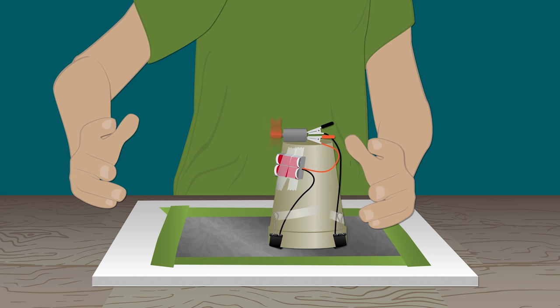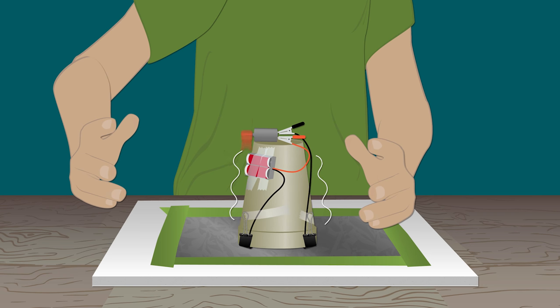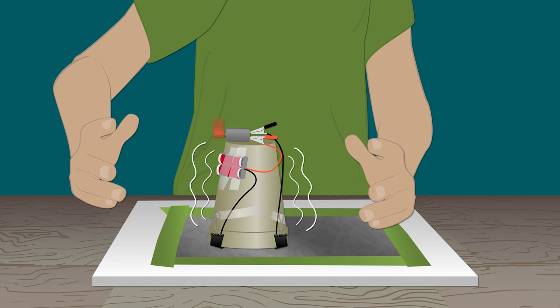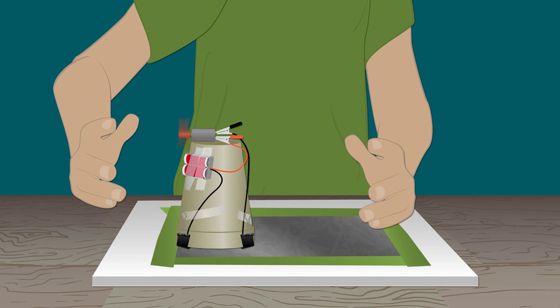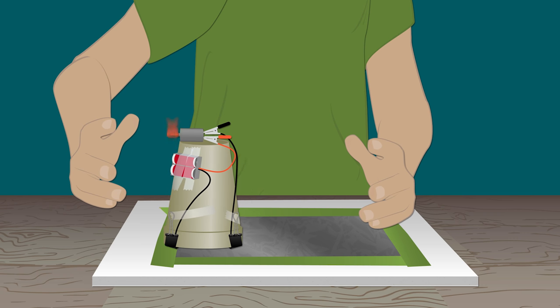Try this out. Put a gummy on the shaft of your motor. Do you notice how it vibrates? Well, this is because the motor is off balance once you put the gummy on the shaft.